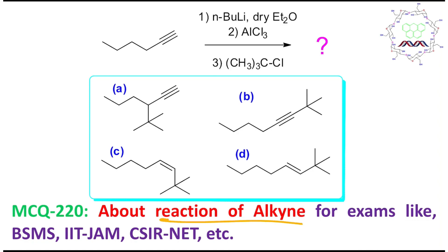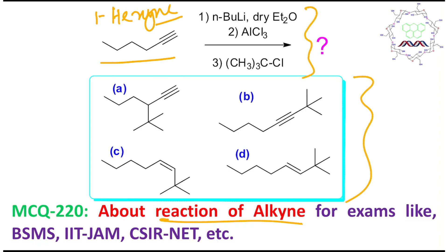Today's MCQ is about the reaction of an alkyne — more specifically, a terminal alkyne, or you may consider its name as 1-hexyne. Its reaction involves three steps and four options are provided, so we have to determine what is the major product of this reaction.